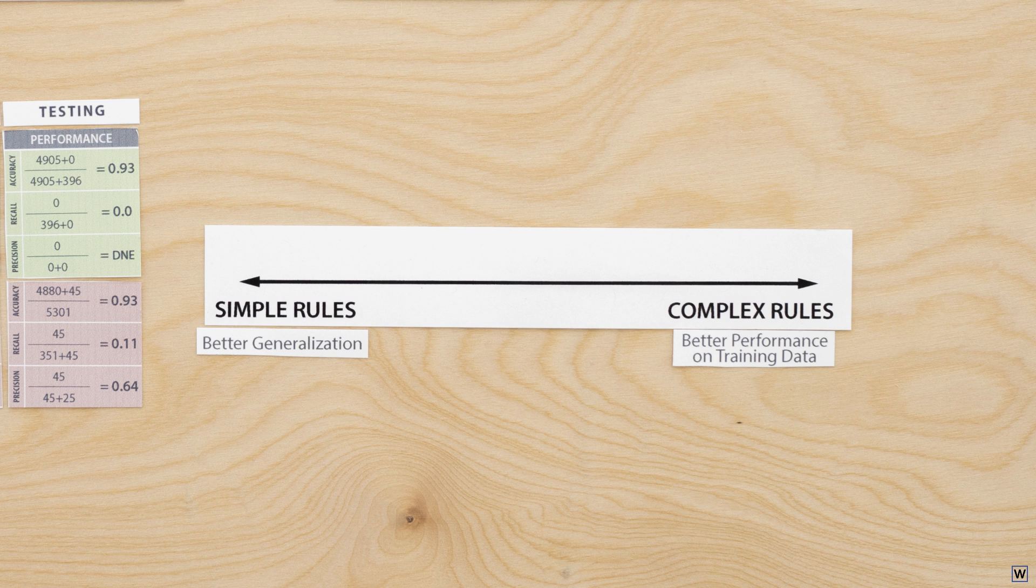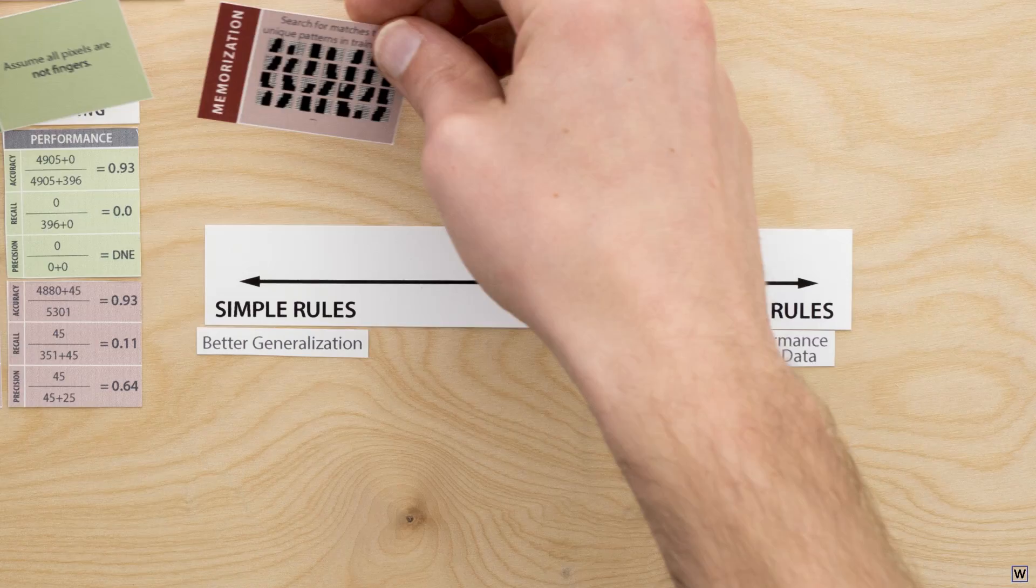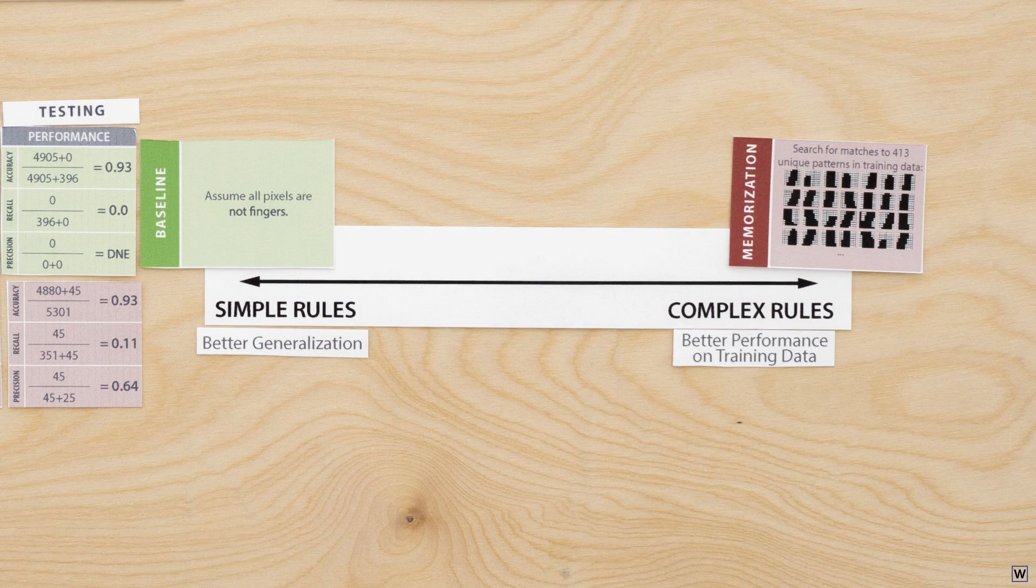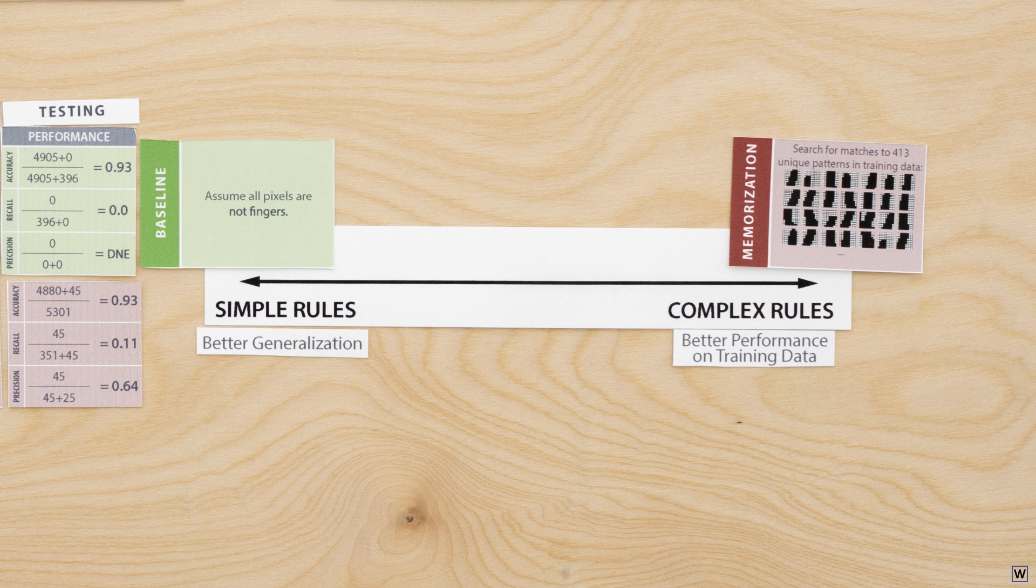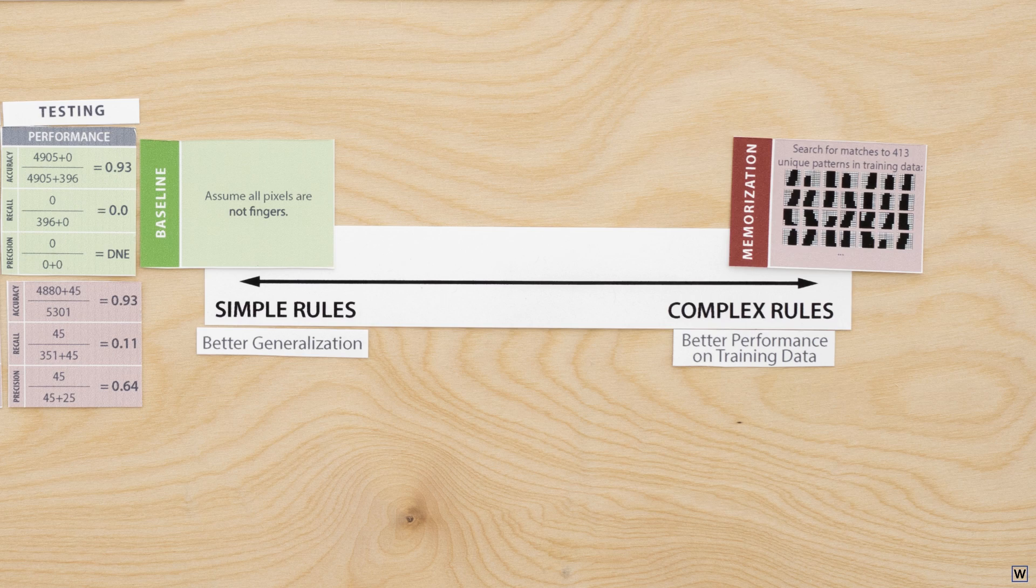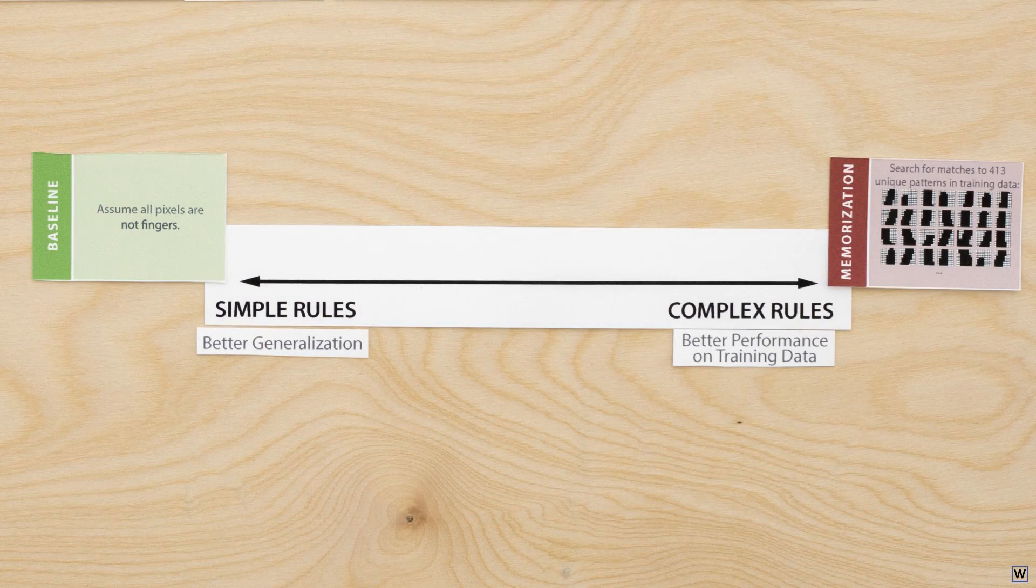So our memorization and baseline strategies are not two separate bad attempts at learning, but two ends of a single spectrum. By putting too much emphasis on either one of our two goals, training set performance or generalization, we end up with lopsided solutions that fail to learn.